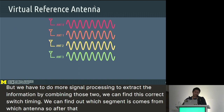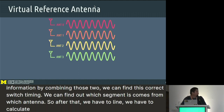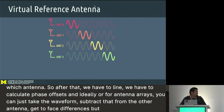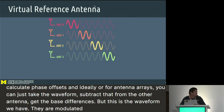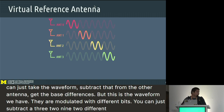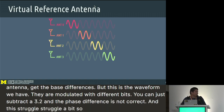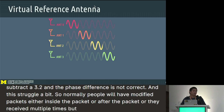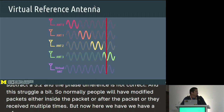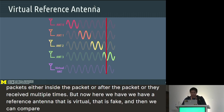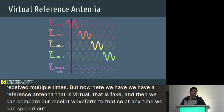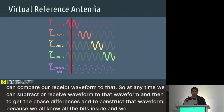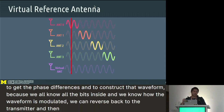After recovering switch timing, we need to calculate phase offsets. Ideally with a four-antenna array, you take a waveform and subtract it from another antenna to get the phase differences. But our segments are modulated with different bits — you can't just subtract antenna 3 from antenna 2 and get the correct phase difference. Normally, people use modified packets or receive the signal multiple times. Instead, we introduce a virtual reference antenna that is fake. We compare our received waveform to this virtual reference. Since we own all the bits and know how the waveform is modulated, we can reverse back to the transmitter and reconstruct the wave being sent — so there's no noise and no frequency drift.